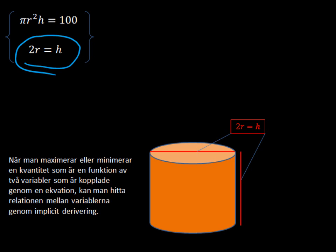So when we maximize or minimize a certain quantity like we were doing with the can, and it's a function of two variables like we had. Okay, we had our r and our h, and they were connected through an equation like we had here. You can find the relationship between the variables through implicit differentiation. And once you have that, then of course, it becomes trivial algebra to find the actual numerical dimension. But the relationship is the interesting thing that falls out of doing it this way.